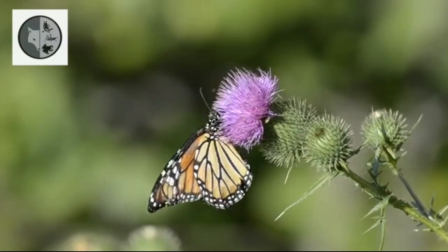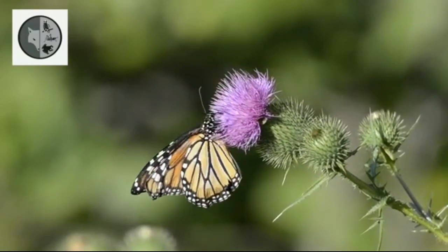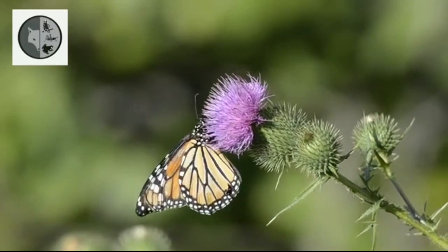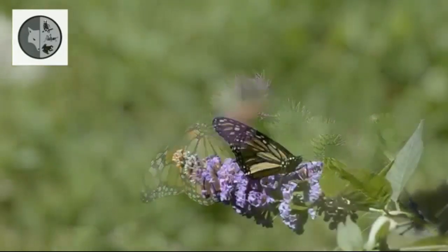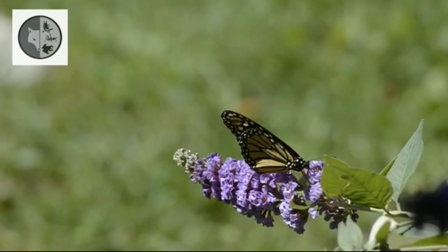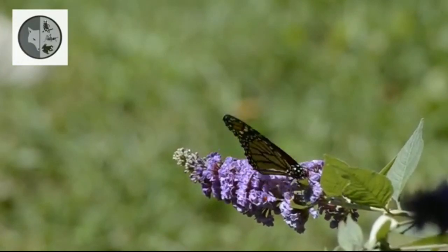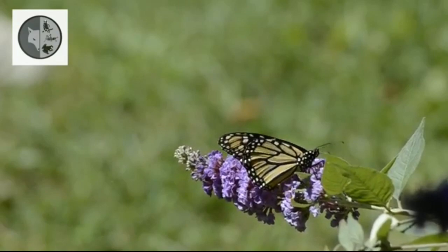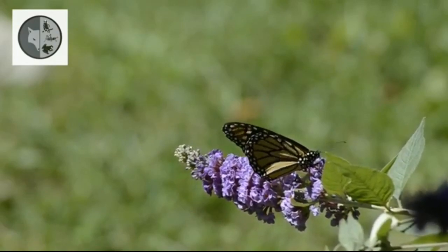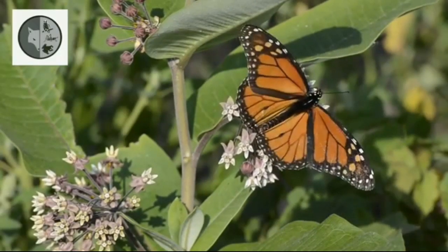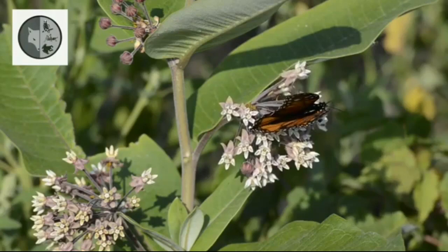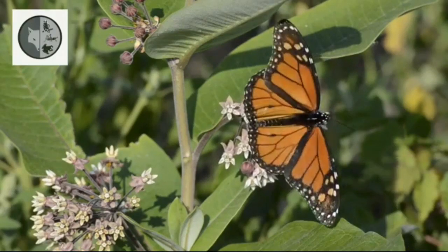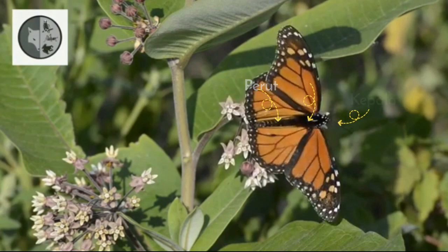Morfologi kupu-kupu: kupu-kupu yang terdiri dari puluhan ribu spesies mempunyai ciri fisik masing-masing. Akan tetapi, pada dasarnya kelas Insekta ini mempunyai morfologi yang merujuk pada spesies umum. Secara fisik, kupu-kupu dapat dibagi menjadi tiga bagian, yaitu yang pertama ada kepala, kemudian dada, dan perut.